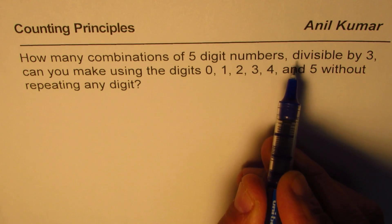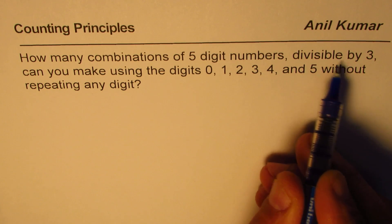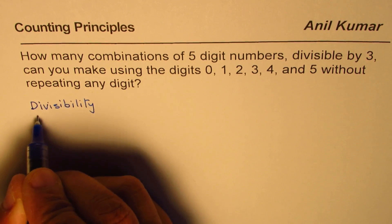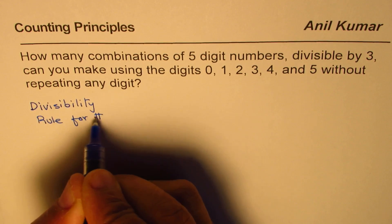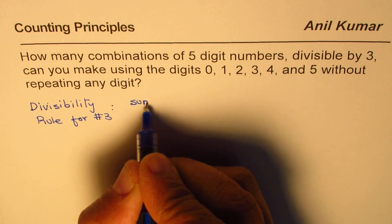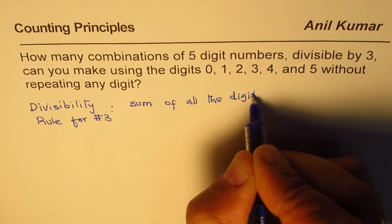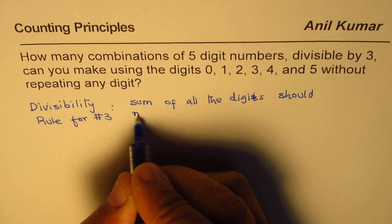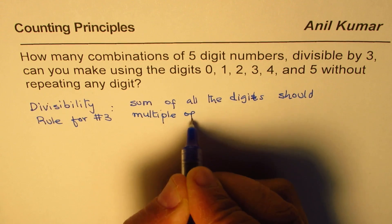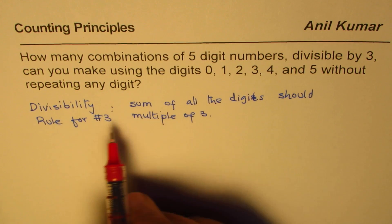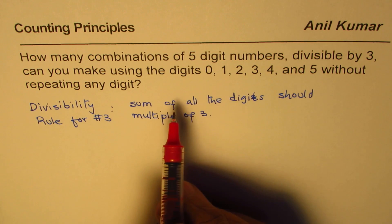Now, to answer this question, we need to understand what is the divisibility rule of three. Let me write it down, divisibility rule for the number three. The rule is that sum of all the digits should be multiple of three. That is the rule. And this rule really helps us to find the solution of this question.